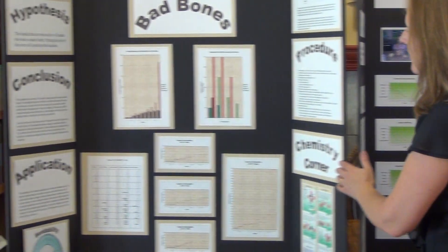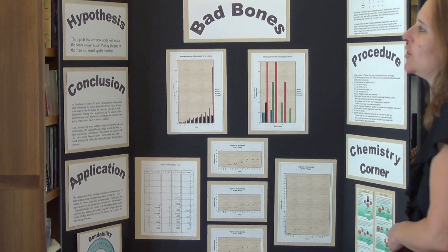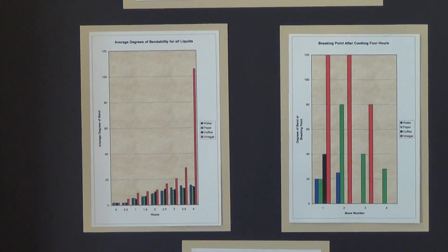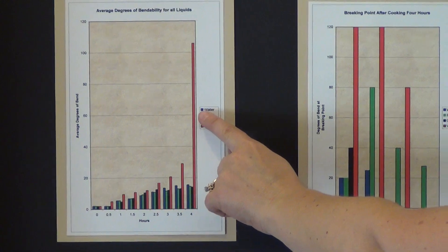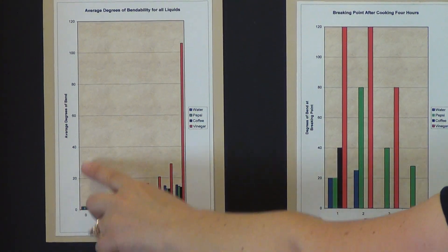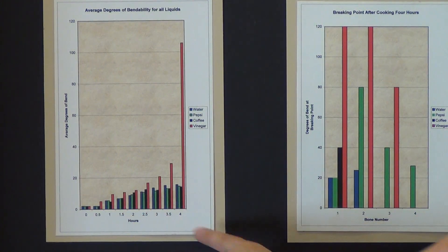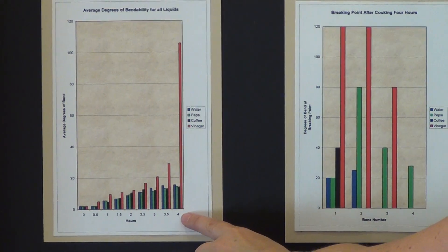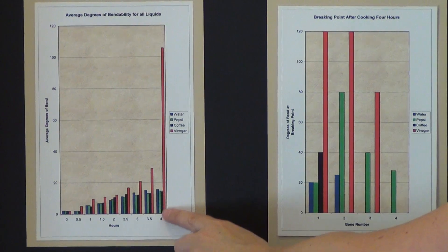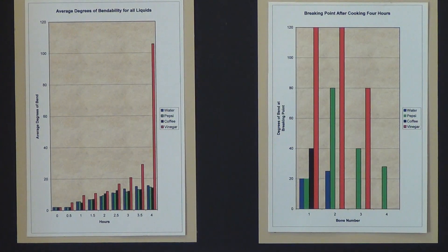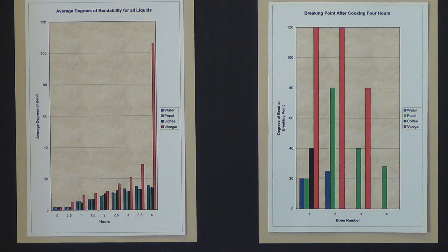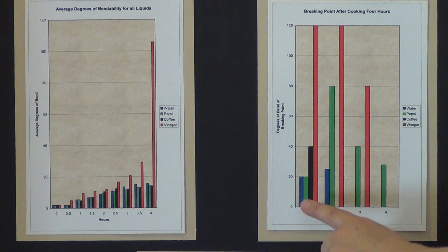The third example's question was: do different liquids change bone strength? In this project, she used bar graphs to show the average degrees of bend for chicken bones soaking in water, Pepsi, coffee, and vinegar over different hours. The most drastic result was that chicken bones soaking in vinegar were able to bend over 100 degrees. When she tested them at four hours, she had more drastic results for the four different bones.